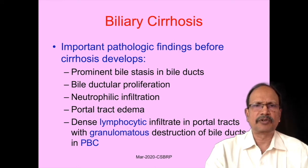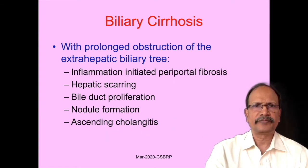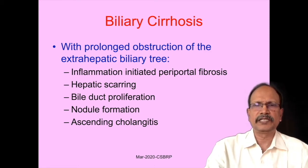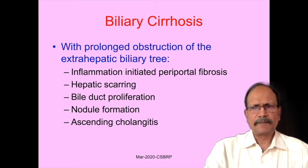You will see multiple biliary radicals in the fibrous tissue. In addition to this, there may be neutrophilic infiltration and portal tract edema. Dense lymphocytic infiltration in the portal tracts with granulomatous destruction of the bile ducts is a common feature that can be appreciated in primary biliary cirrhosis. With prolonged obstruction, there may be inflammation, periportal fibrosis, hepatic scarring, bile duct proliferation, and nodule formation, which is seen in other varieties of cirrhosis. Ascending cholangitis is one more important finding or complication of biliary cirrhosis. Extrahepatic biliary passages are unaffected; only intrahepatic biliary passages are affected. Because of this, even though we call this cirrhosis, patients are comfortable and can lead a very normal life without much complications for quite a longer time than the classic variety of cirrhosis.